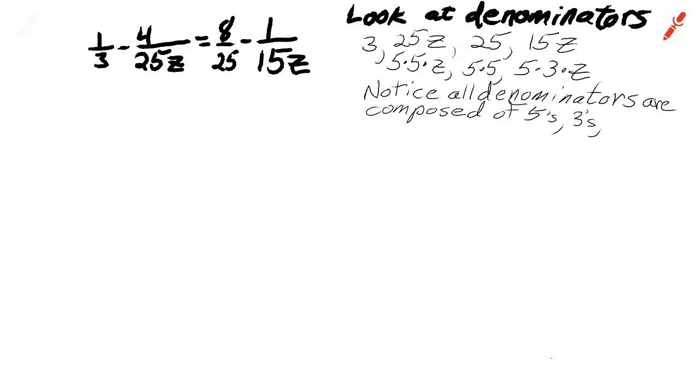Notice all denominators are composed of fives, threes, and z's. We need a number, a lowest common denominator, that will cancel out a three, two fives, and a z. And it's got to be one number.